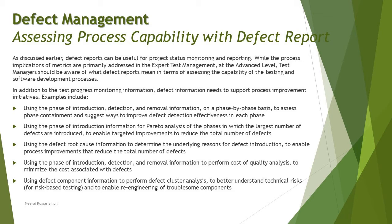Next, using the phase of introduction, detection, and removal information to perform cost of quality analysis. Cost of quality is the overall project cost for fixing defects. For example, out of 500 defects in a project, you count how many were phase-contained, how many were found the next phase, how many two phases later, and so on. You calculate ratios to determine how much could have been saved in delivering the product, using phase introduction and removal information from the defect report.